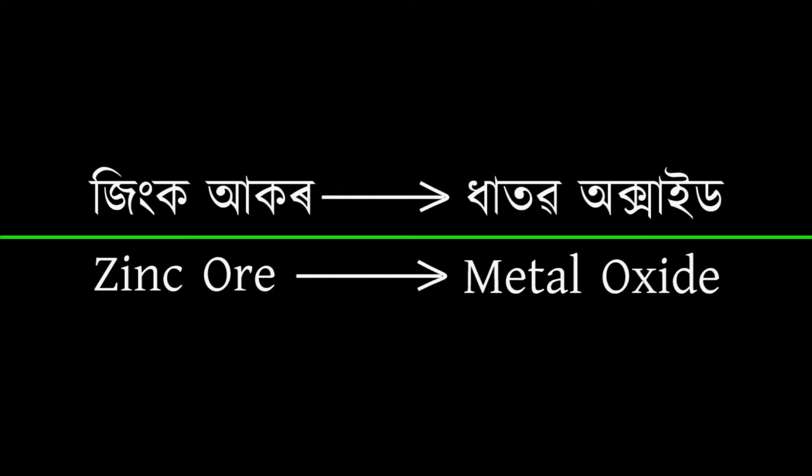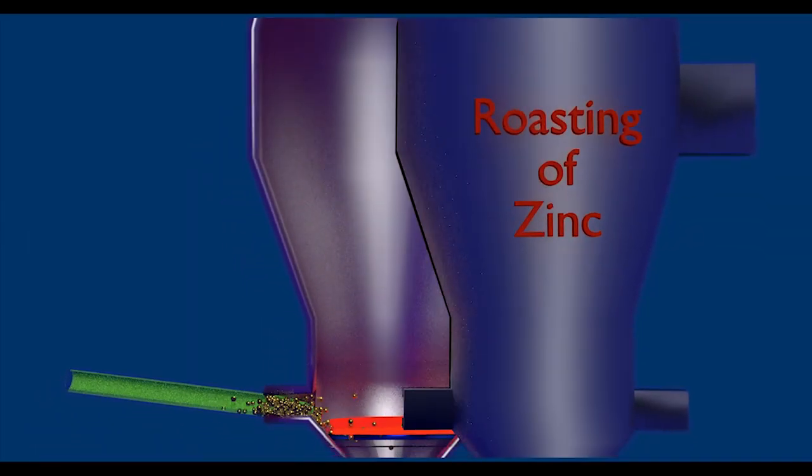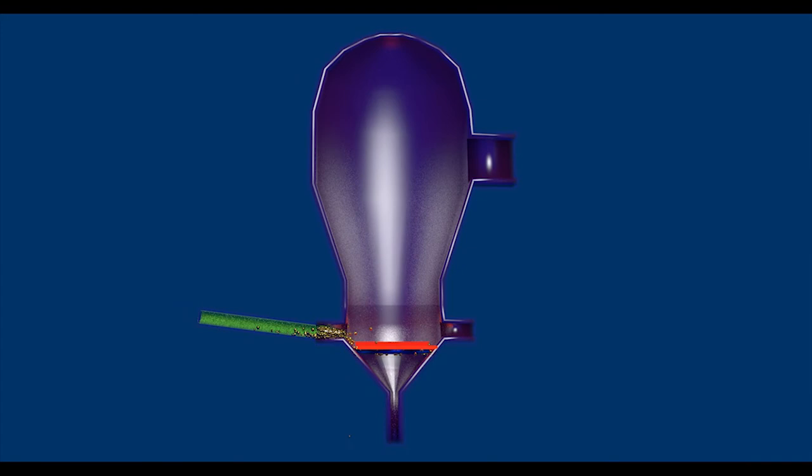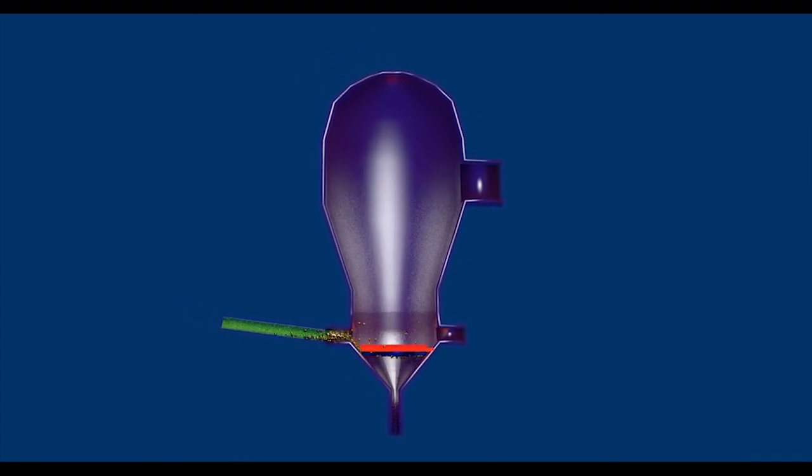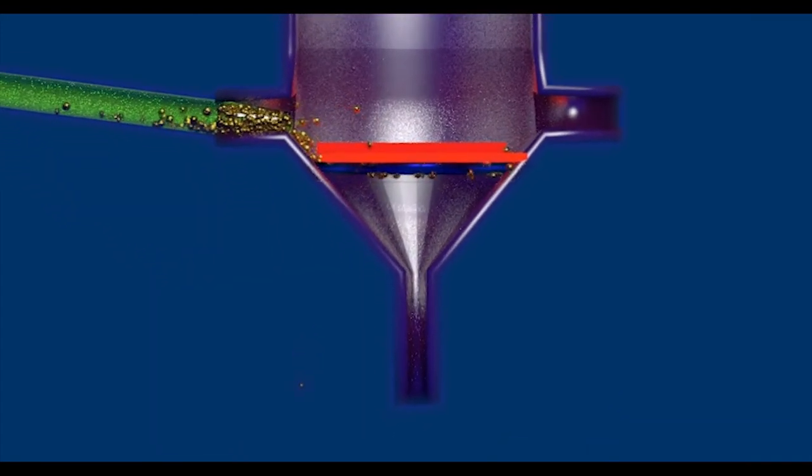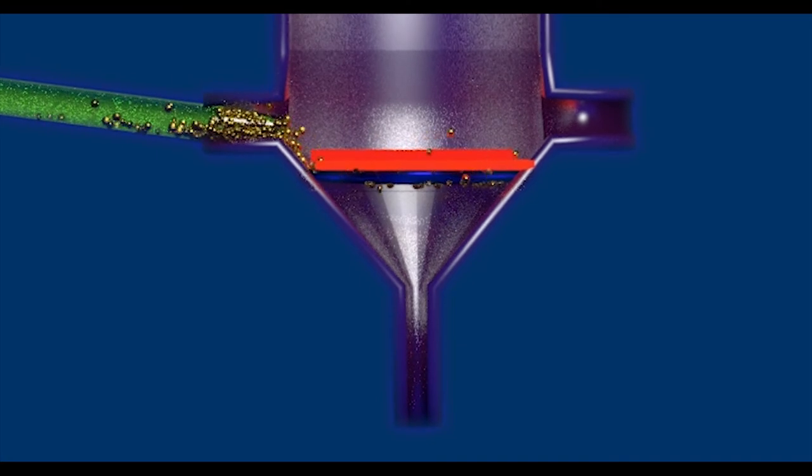After concentration of the ore, zinc is converted into oxide. This is conducted inside a blast furnace. The finely powdered ore enters the furnace through a definite path where it is heated to a definite temperature.